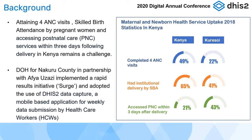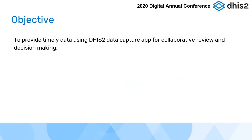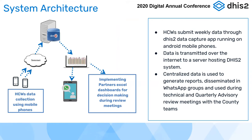Because it was an RRI, we needed data more frequently than what our national system was providing. Our national system was providing data on a monthly basis, but we wanted data on a weekly basis so that we could use it for implementation, progress monitoring, and decision making. So we adopted the use of the DHIS2 data capture app, a mobile-based application for weekly data submission by healthcare workers. Our objective was to provide timely data using the DHIS2 data capture app for collaborative review and decision making.